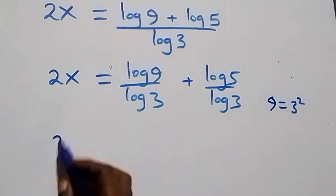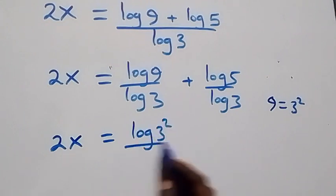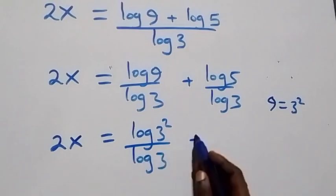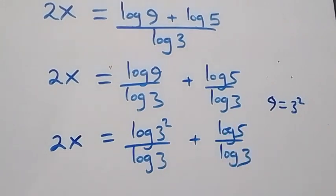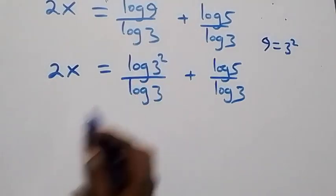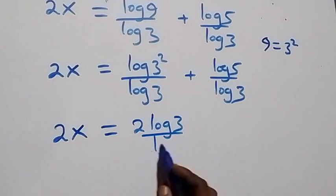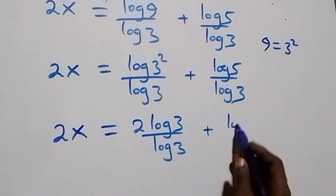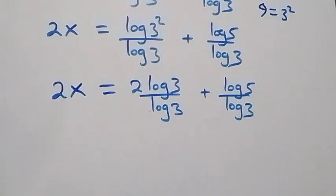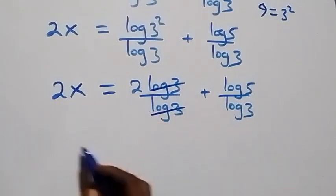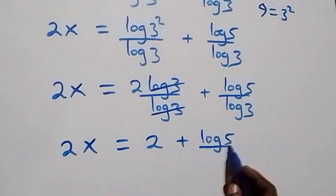We can express nine as three squared, and what we have becomes two x equals to log three squared over log three, plus log five over log three. When we apply the power rule of logs, the two comes out front and we have two x equals to two log three over log three, plus log five over log three. Here, log three cancels each other, so two x now equals to two plus log five over log three.